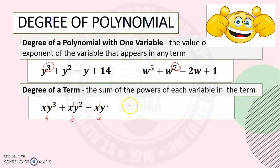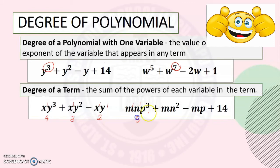Let's have another example. For the first term, we have 1, 1, and 3, which equals 5. For the second term, 1 and 2 equals 3. For the third term, 1 and 1 equals 2. For the last term, which is 14, it is understood that the degree is 1.